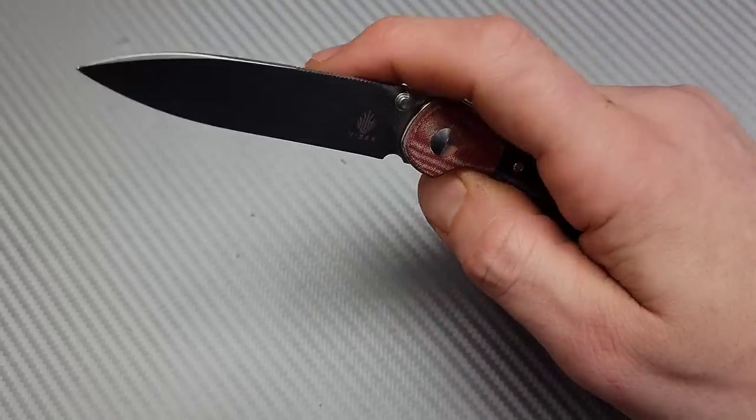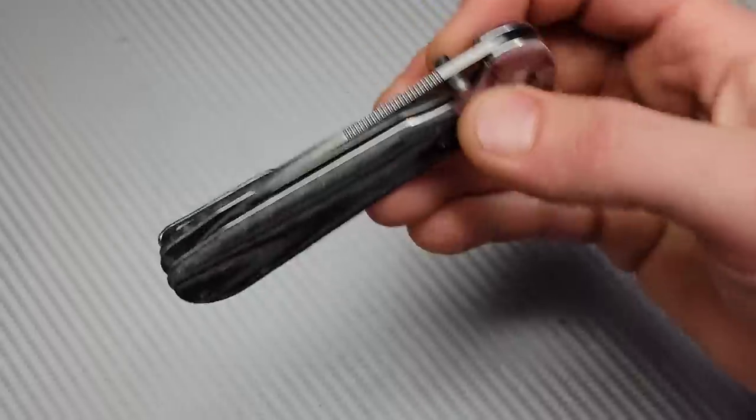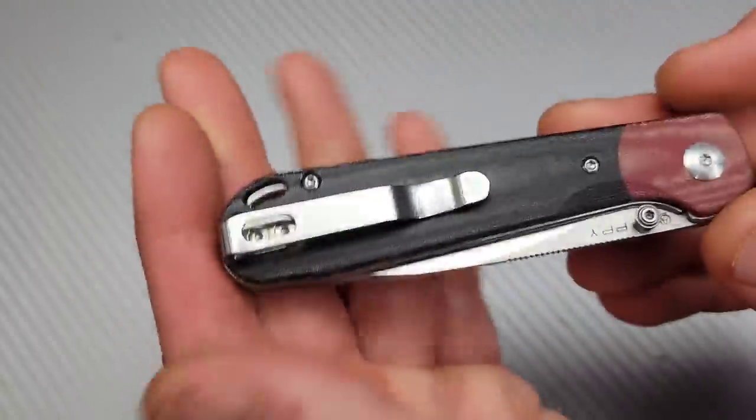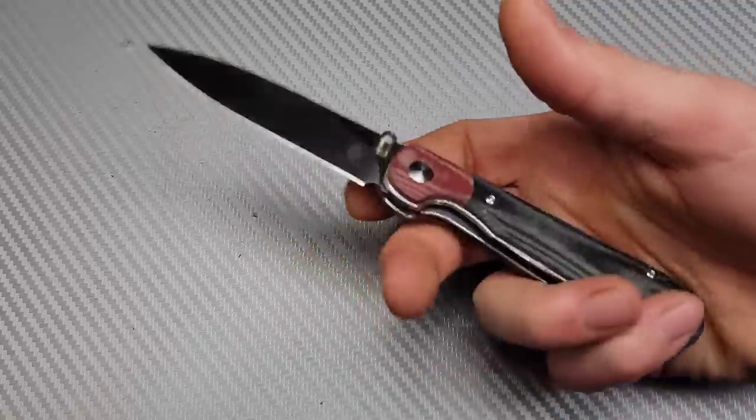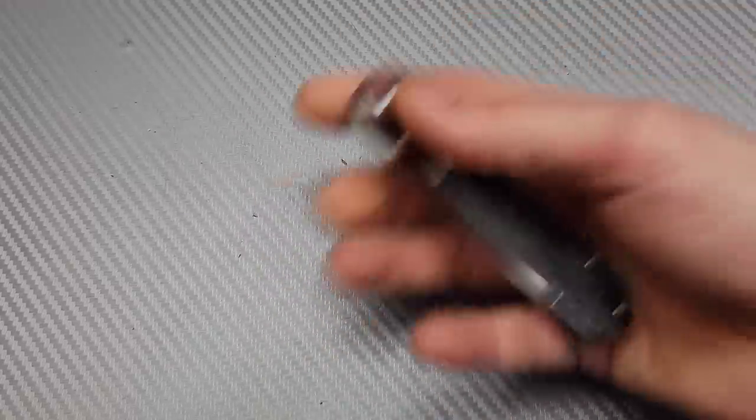They have the jimping in the right place, deep carry pocket clip that is reversible, really cool little knife. If you want to get some Kaisers I do have 10% off on Mojave Outdoors or I can link them below for you from Amazon.